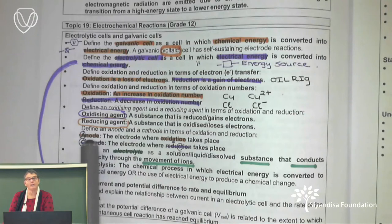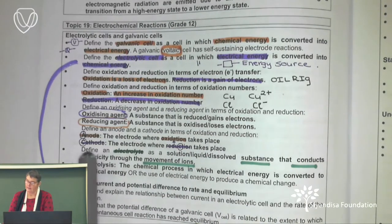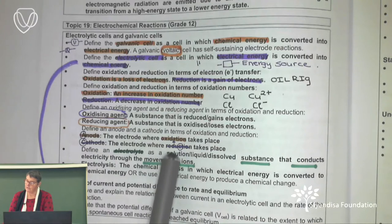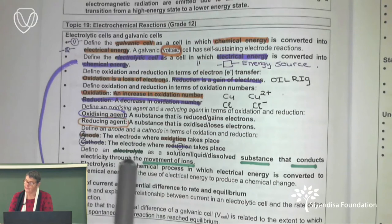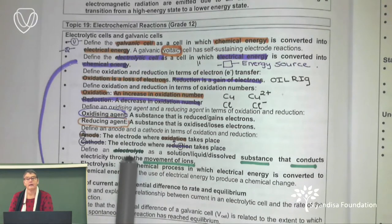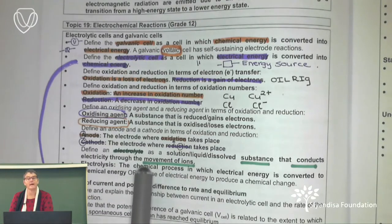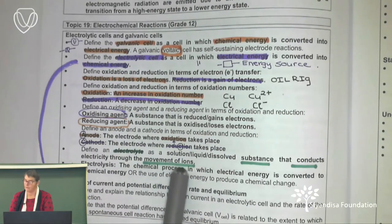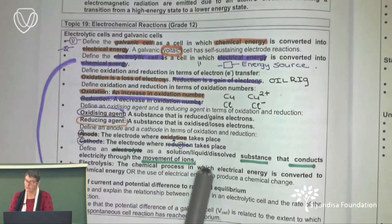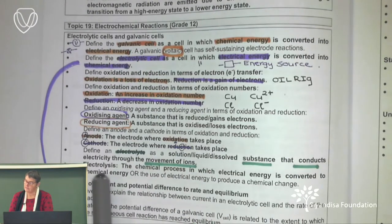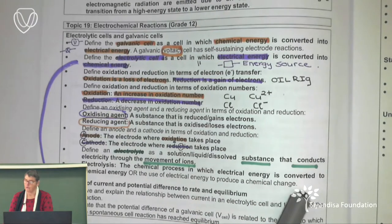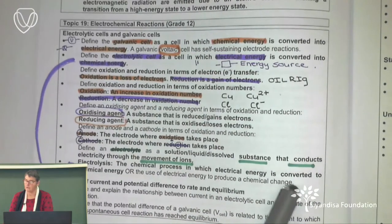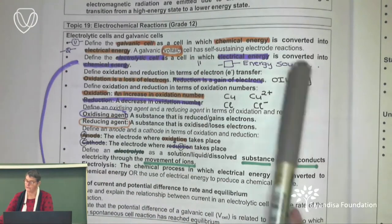My oxidizing agent is the substance that is reduced, or the substance that gains electrons. My reducing agent is the substance that is oxidized, or the one that has lost electrons. We must know our anode is where oxidation takes place, and our cathode is where reduction takes place. An electrolyte is a substance that conducts electricity by the movement of ions. Electrolysis is a chemical process in which electrical energy is converted to chemical energy.